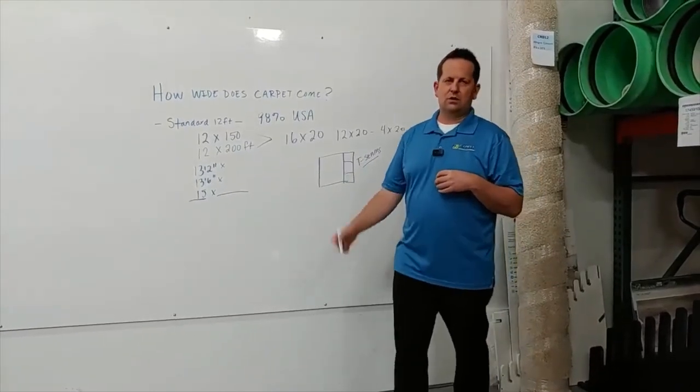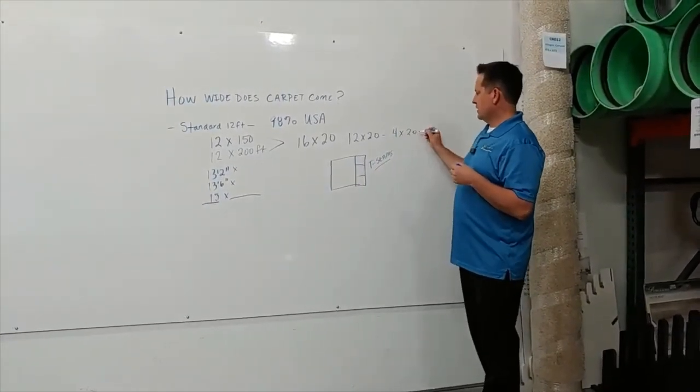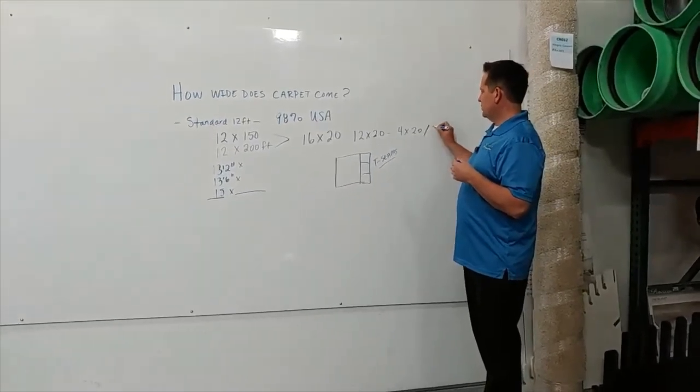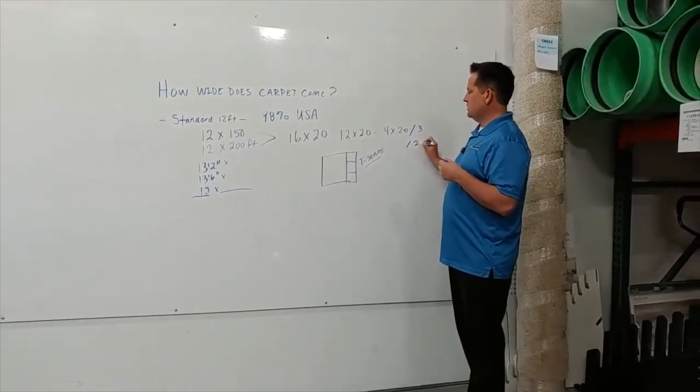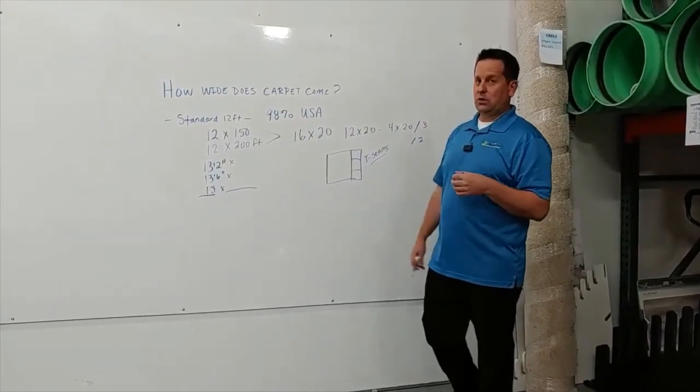With a competent installer who knows what they're doing, that's not a big deal. You would just take this amount here and divide by three or divide by two, depending on how many seams you want, add that to your total, and then you'd know how much carpet to order.